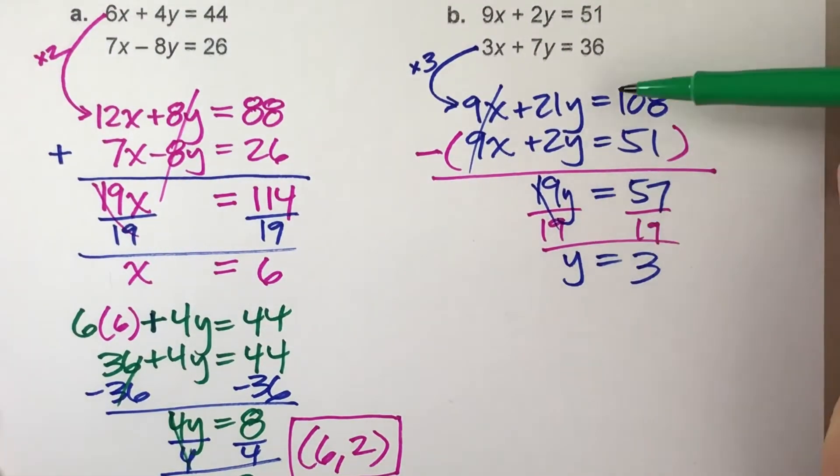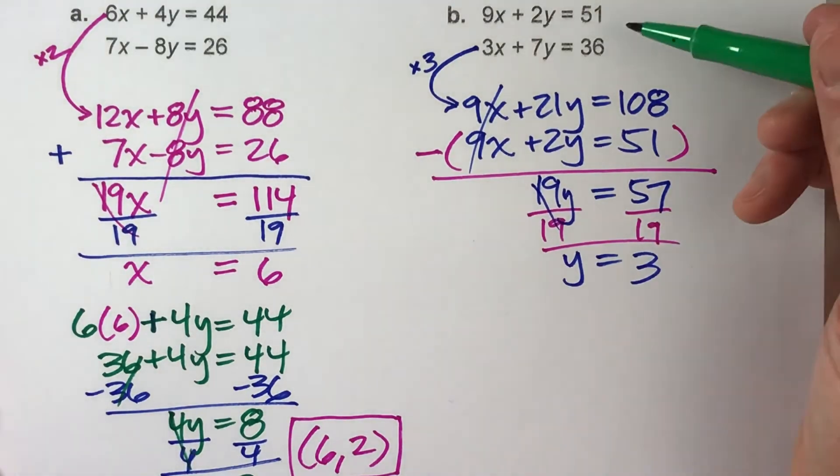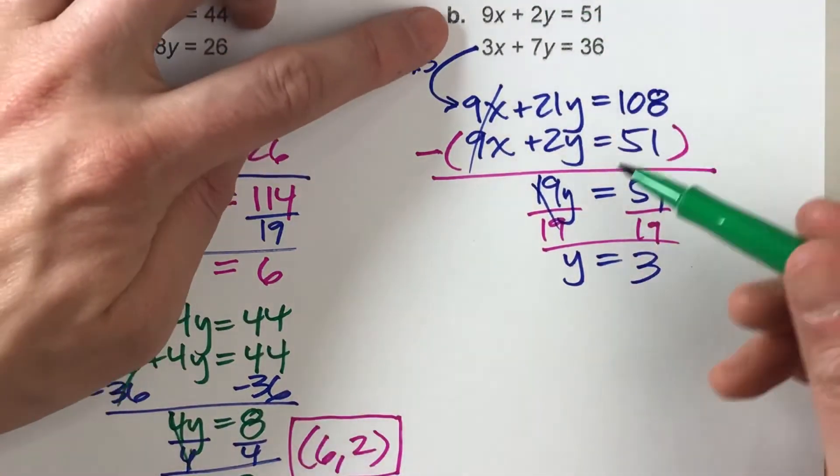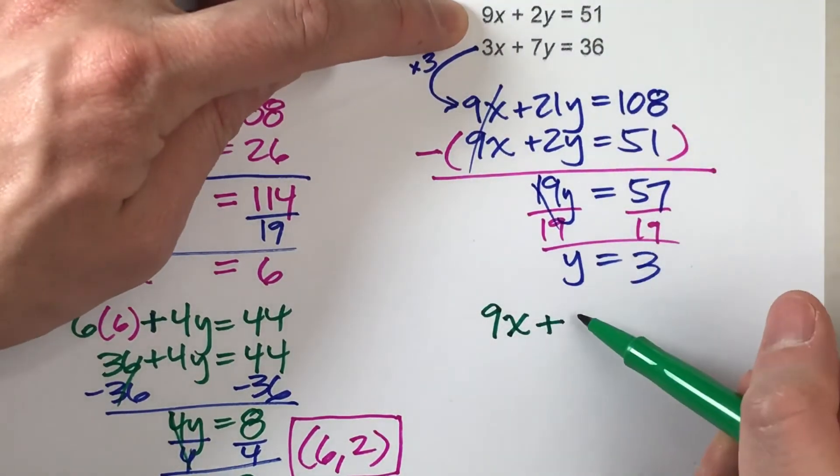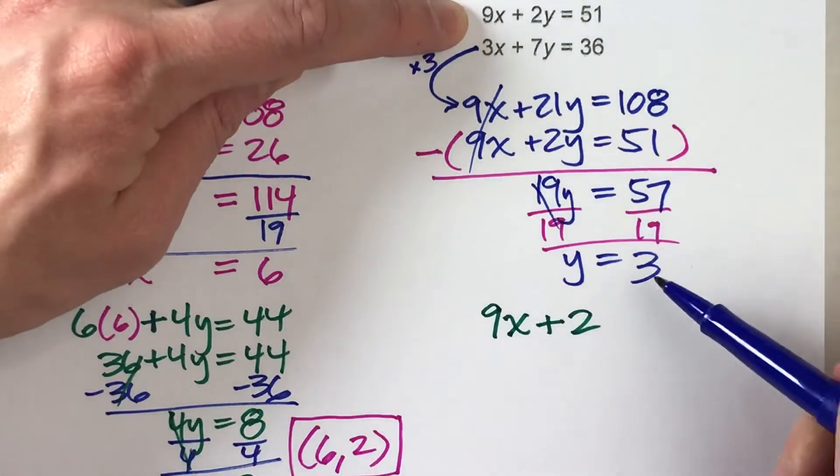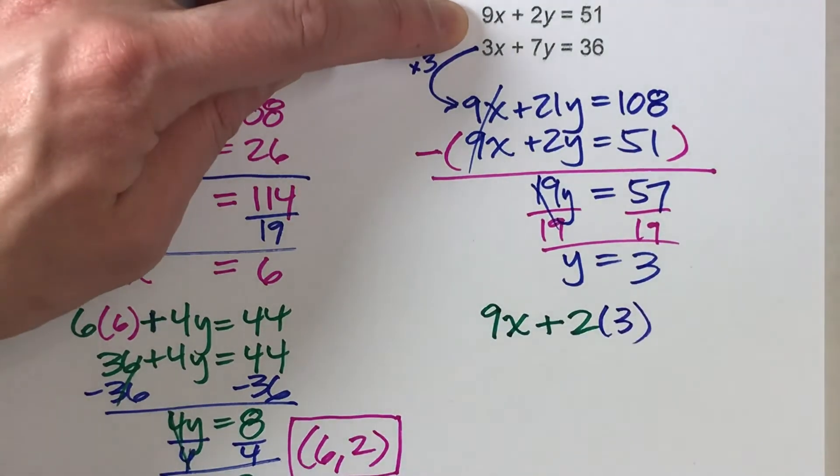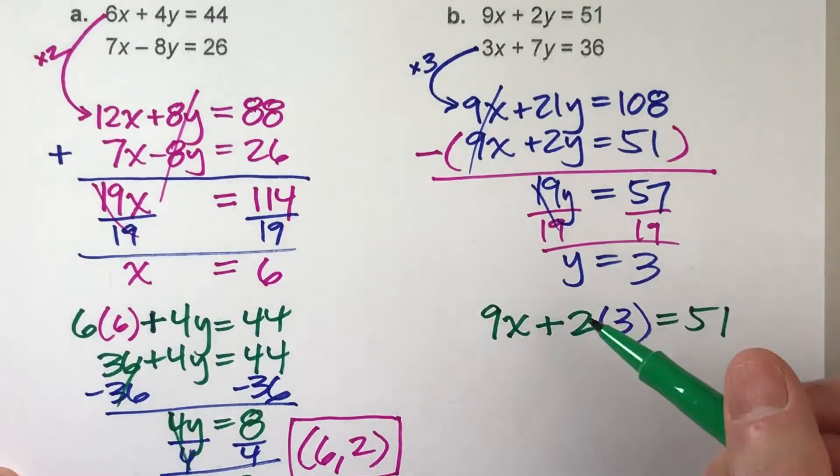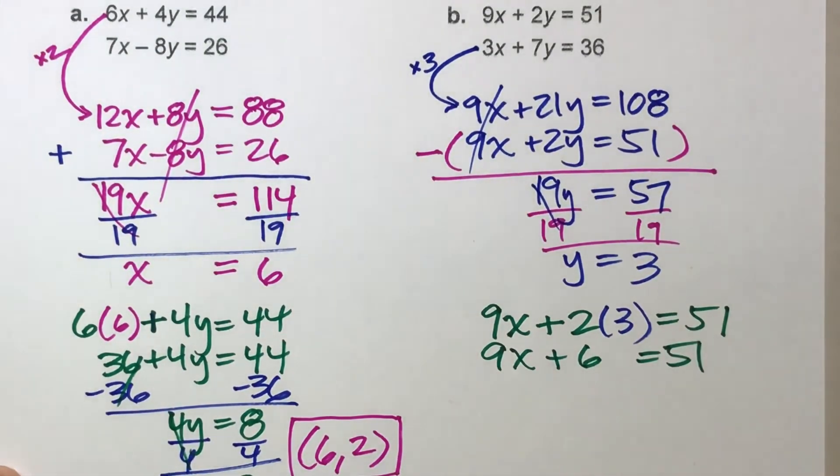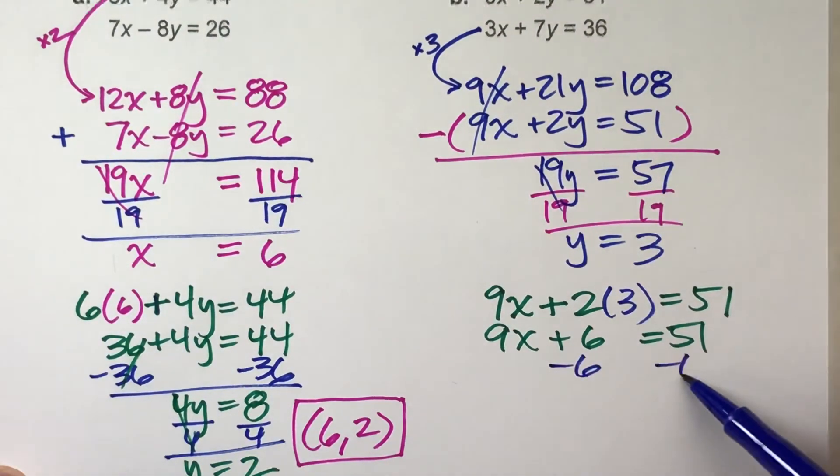Now we can go back and solve for X. Again, you can choose either equation. I'm gonna pick the first equation: 9 times X plus 2 times the Y value, and we just found that the Y value was 3, has to equal 51. So this is basically 9X plus 6 equals 51.